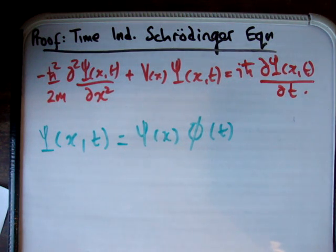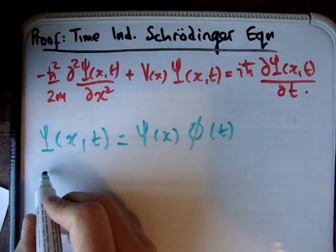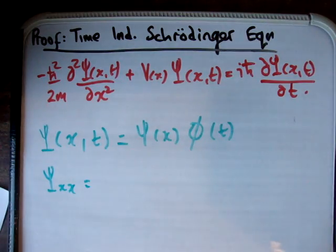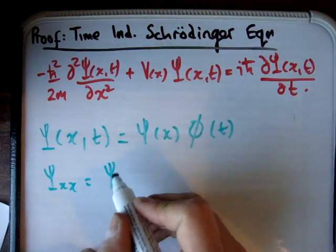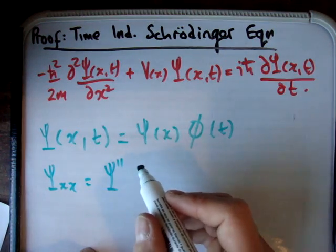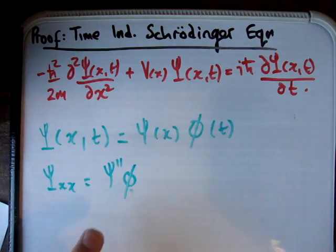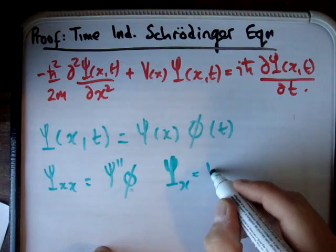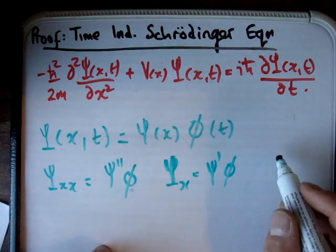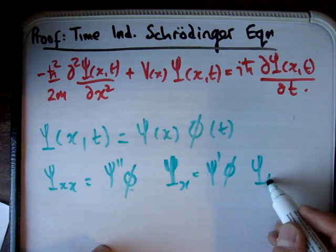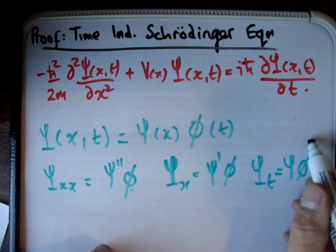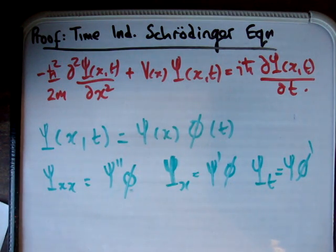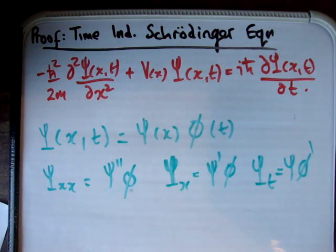The next thing I'm going to do is get the derivatives. The second derivative with respect to x is going to be small psi double prime times phi. The first derivative with respect to x is small psi prime times phi. And the first derivative with respect to time is equal to psi times phi prime. That's just the product rule. Notice the notation using primes to make things easier without writing out full derivative notation.